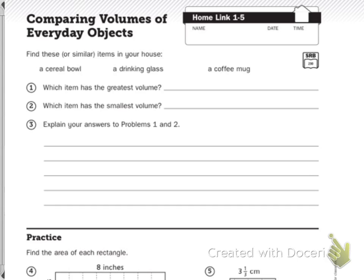So tonight at home you need to find a cereal bowl, a drinking glass, and a coffee mug or items that are similar.